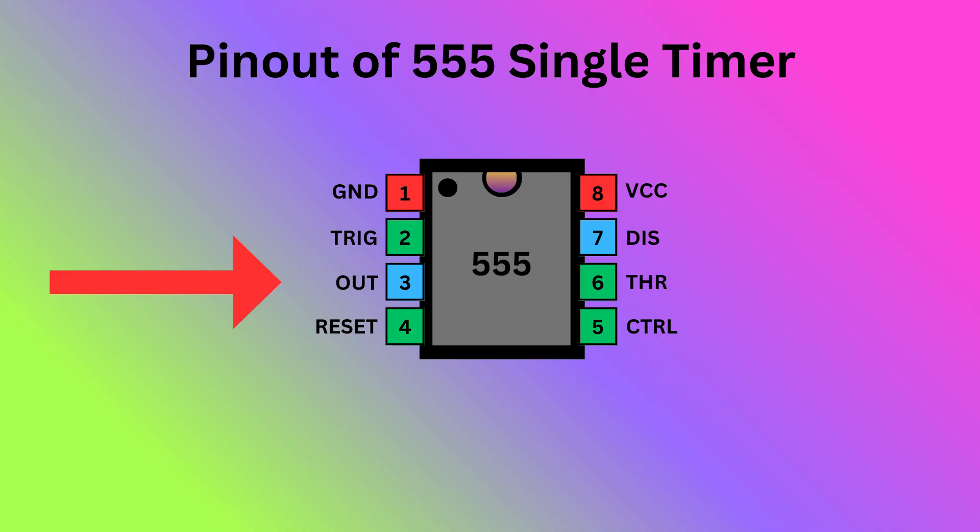Pin 3 is output. It delivers the result of the timer's operation based on its mode, either monostable, astable, or bistable. Pin 4 is reset. It is used to reset the 555 timer's internal flip-flop. Pin 5 is control. It allows you to control the threshold voltage levels that the internal comparators use to set and reset the flip-flop.